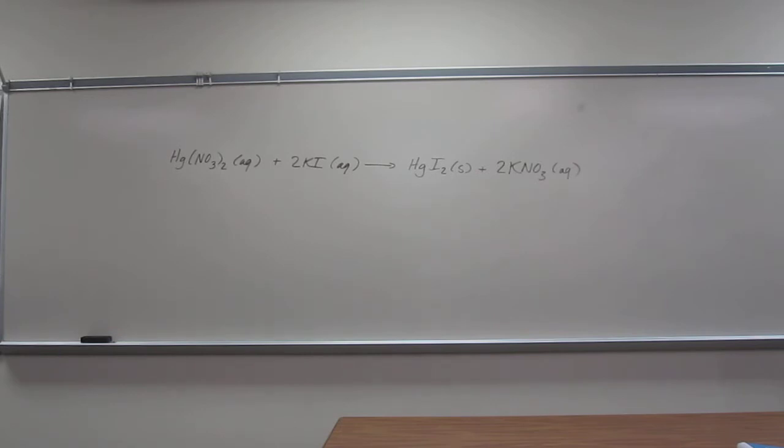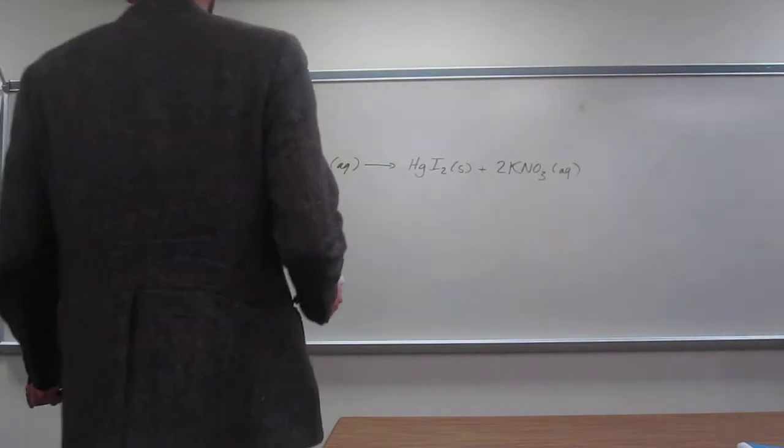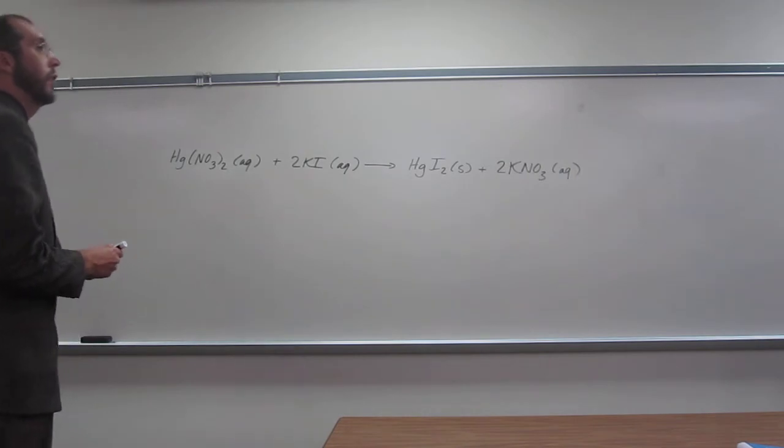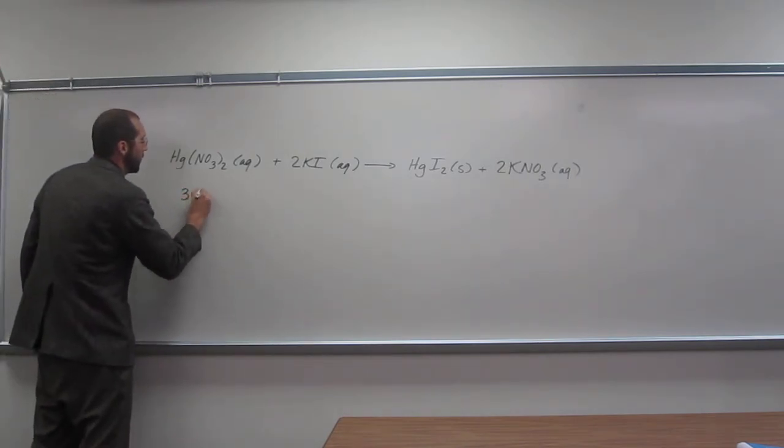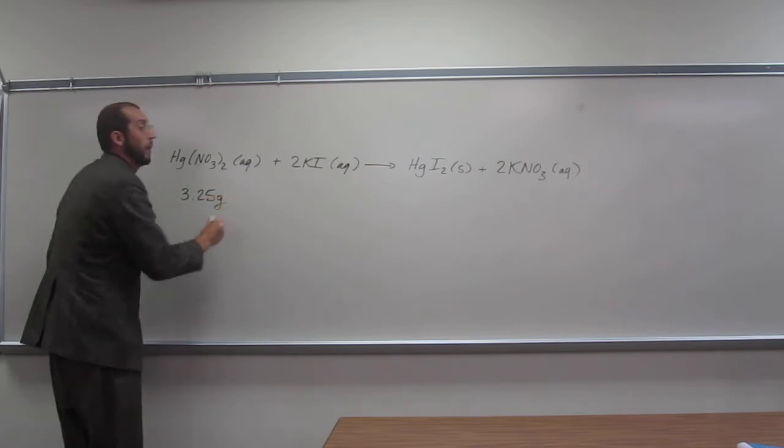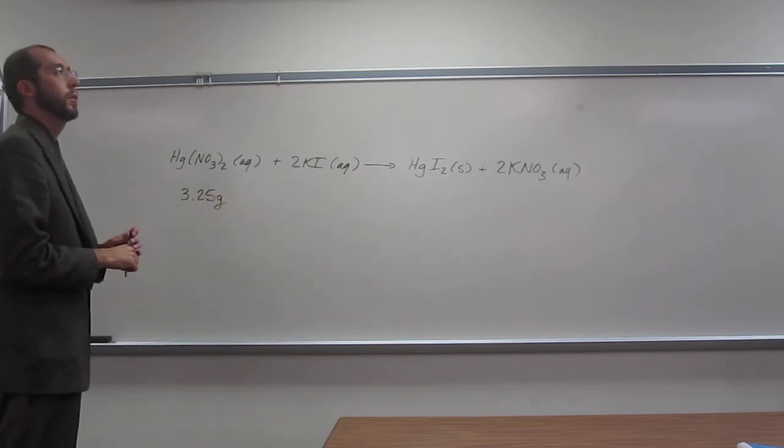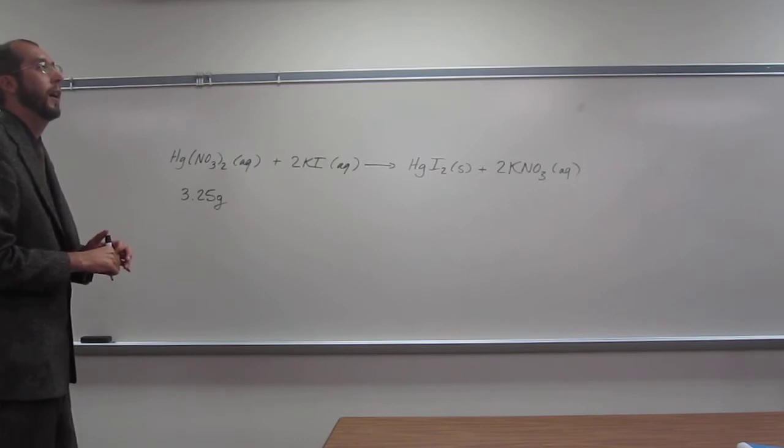It says aqueous solutions of mercury 2 nitrate and potassium iodide will react to form a precipitate of mercury 2 iodide and aqueous potassium nitrate according to the reaction that's written on the board. So if you add 3.25 grams of mercury 2 nitrate to 3.32 grams of potassium iodide,